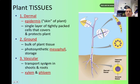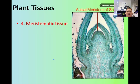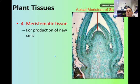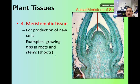Then you have the two types of vascular tissues, which are xylem and phloem, which we're going to expand on shortly. And then the last part is the meristematic tissue. The meristematic tissue is used for the mitosis part of a plant cell — it's for the production of new cells. Think about growing tips in roots and stems inside the shoots.